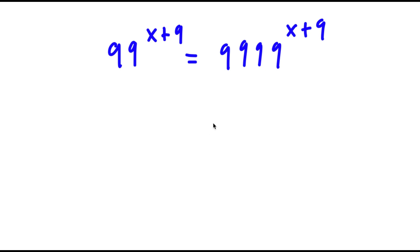In this problem, I have 99 to the power of x plus 9 is equal to 9,999 to the power of x plus 9.